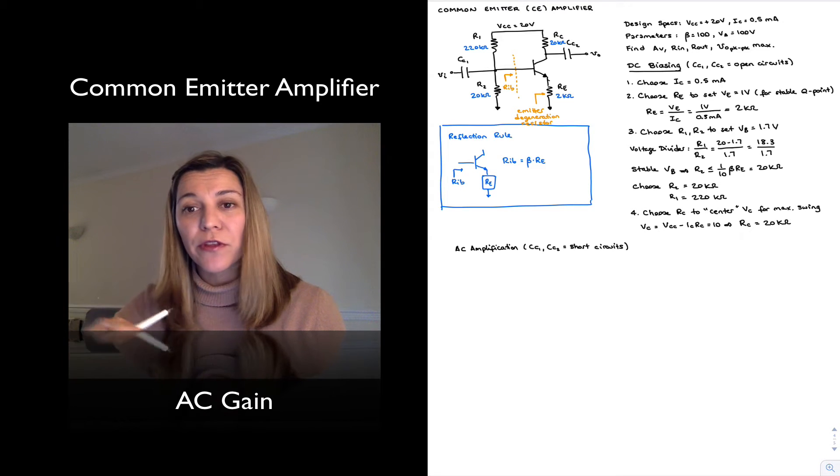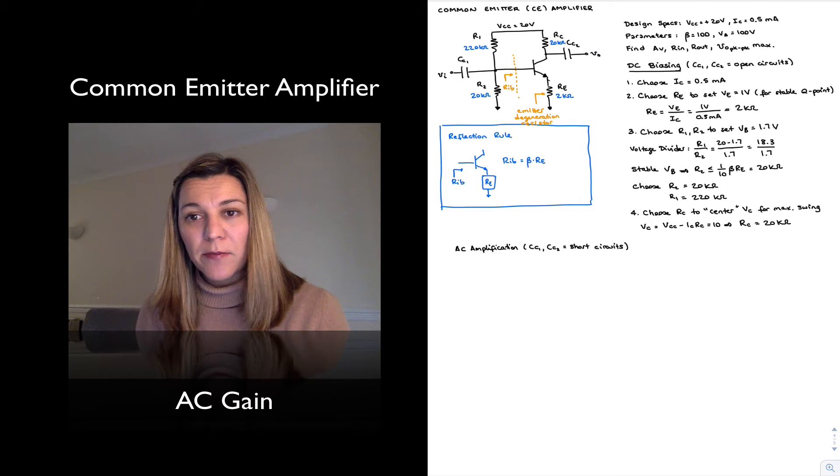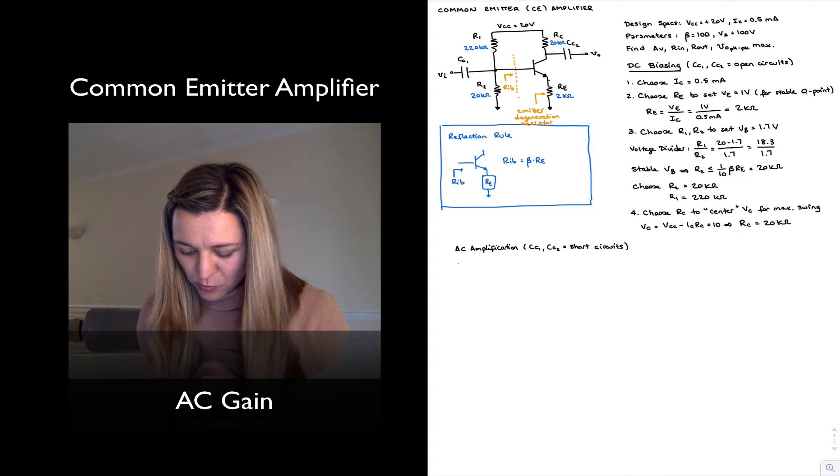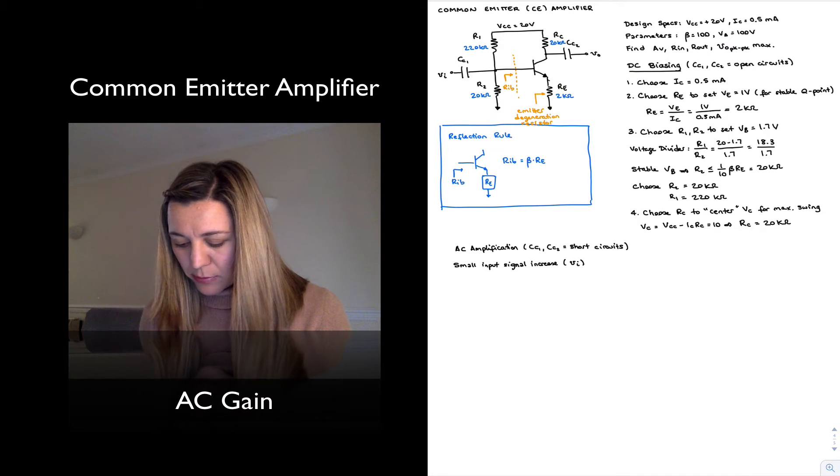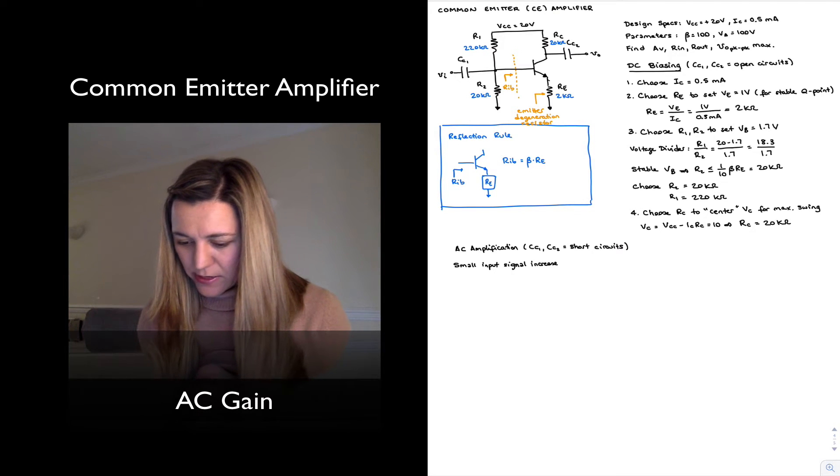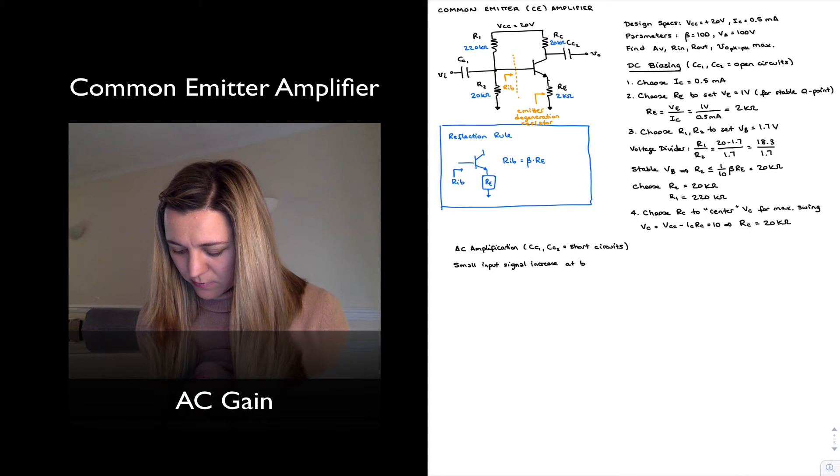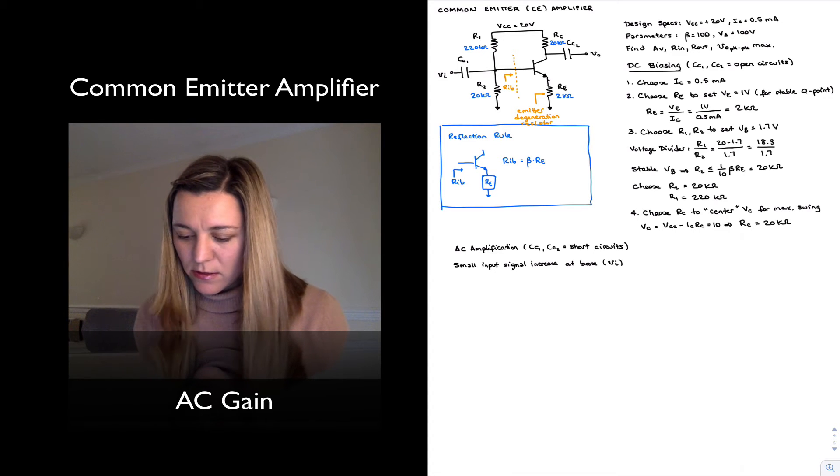Then it may decrease and do other things, but just look at what happens when the signal increases a little bit. So we have a small input signal increase, VIN, and VIN is applied at the base.